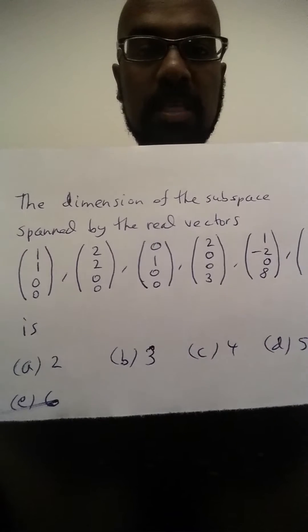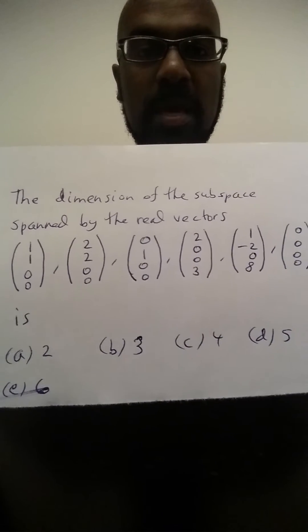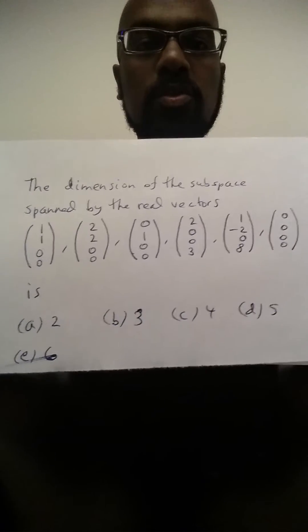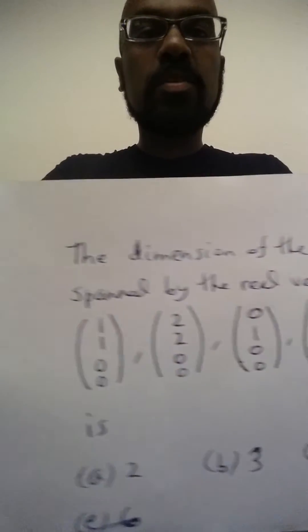Today's problem is an example of a problem that was on one of the past GRE Math Subject Test practice tests. The dimension of the subspace of real vectors spanned by these real vectors here is what? And the choices are 2, 3, 4, 5, and 6, and here are the vectors.